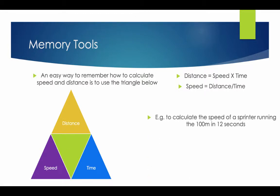For example, to calculate the speed of a sprinter running the 100 meters in 12 seconds, divide the distance by the time: 100 meters divided by 12 seconds, giving 8.3 meters per second.